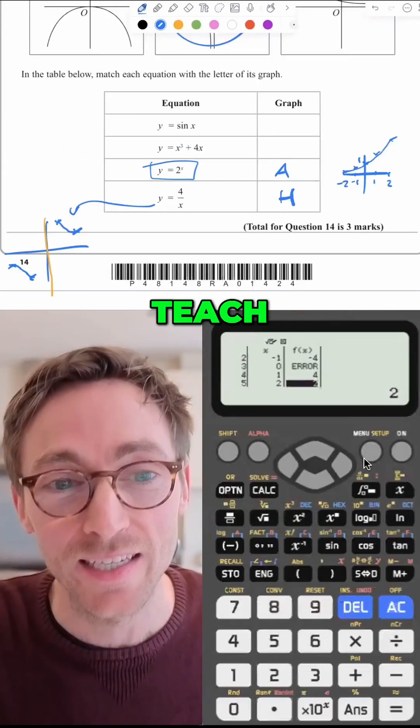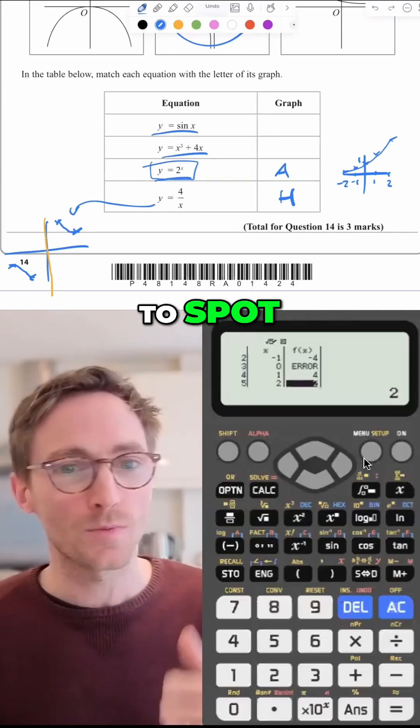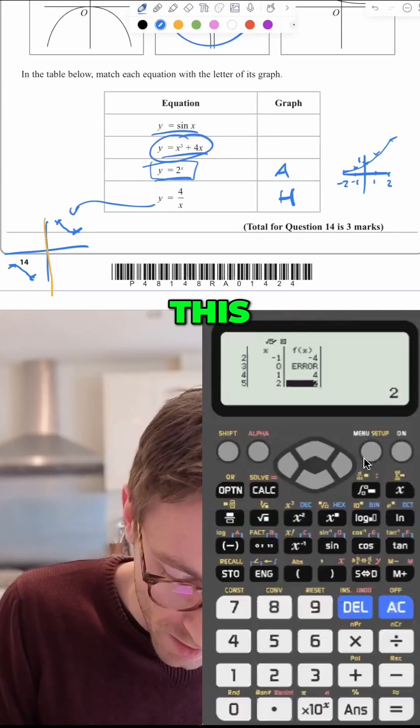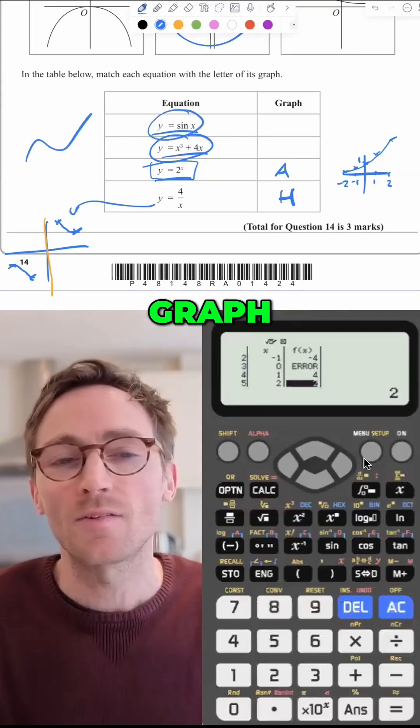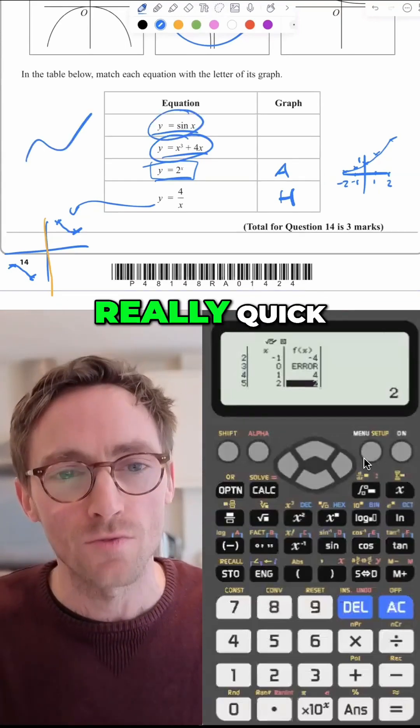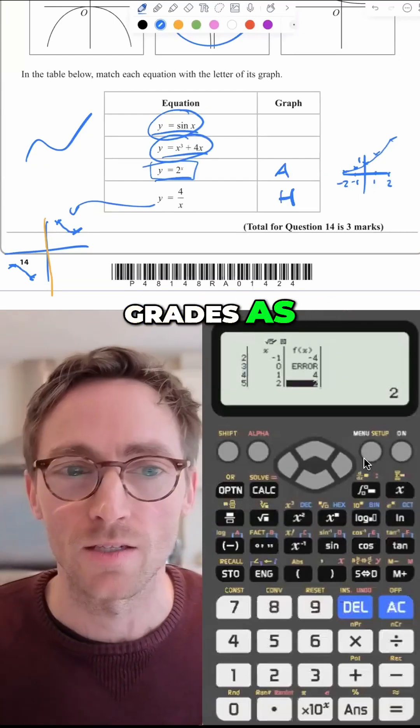If I had to sit here and teach you what each of these graphs actually means and how to spot a graph and how to spot different shapes and the fact that this is a cubic and this is a positive cubic, which means it's going in this direction, sine x is trigonometry graph, I'd be here for ages. What I'm trying to do is give you really quick hints and tips and tricks that can boost your grades as quickly as possible.